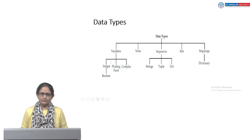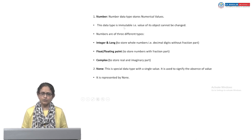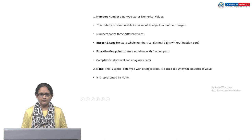Under Numbers, we have three categories: Integer, Floating Point Number and Complex Numbers. Number data types store the numerical values. This data type is immutable, that means once you have specified the value, the value cannot be changed. Integer stores the whole number. Float or Floating Point data type stores the decimal values. Complex data type stores the real and imaginary values.